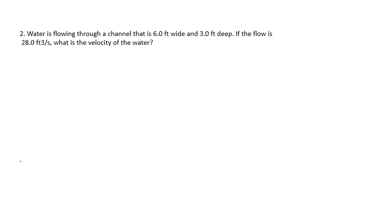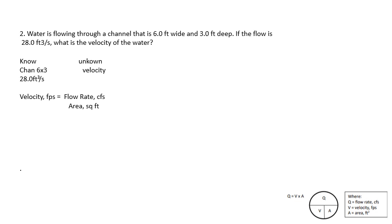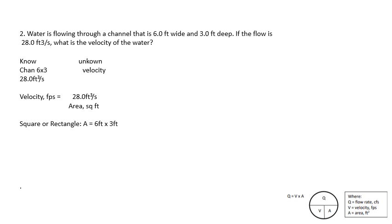Question number two: Water is flowing through a channel that is six feet wide and three feet deep. If the flow is 28 cubic feet per second, what is the velocity of the water? We know the channel is 6 by 3 feet and the flow is 28 cubic feet per second. Velocity equals flow rate divided by area. Area of a rectangle is length times width: 6 times 3 equals 18 square feet. Plug that in and the answer is 1.55 feet per second.